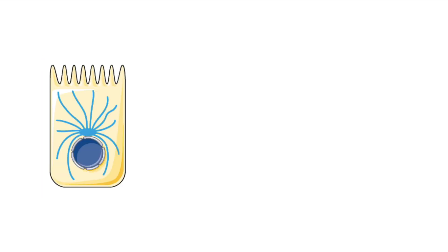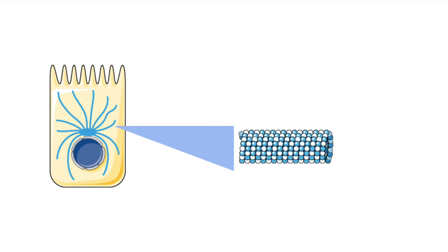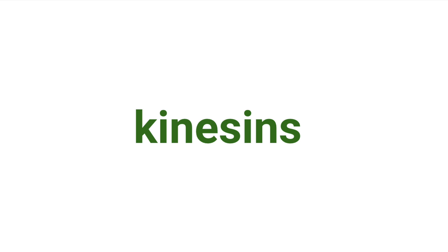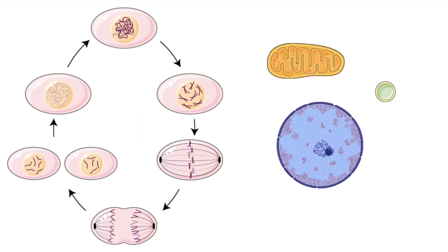Kinesins use energy from the cell to transport materials along microtubules, which are thin tubes connecting and providing structure to different parts of the cell. Kinesins play a critical role in cell division and the movement of structures in the cell.